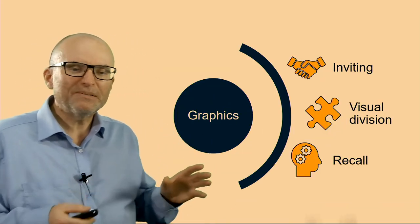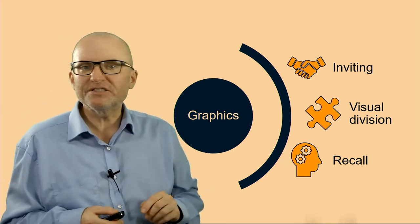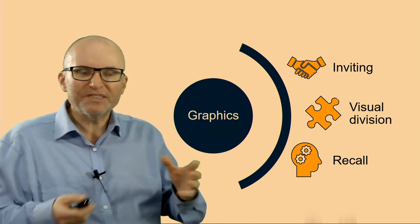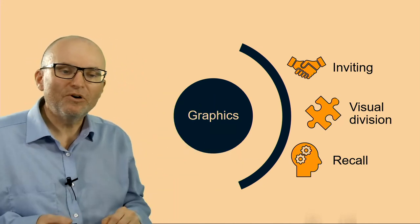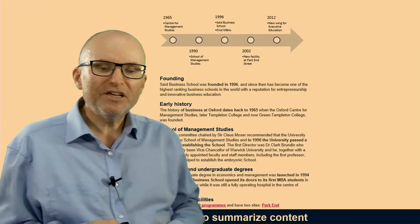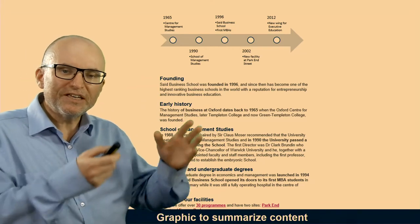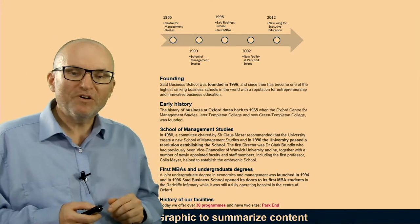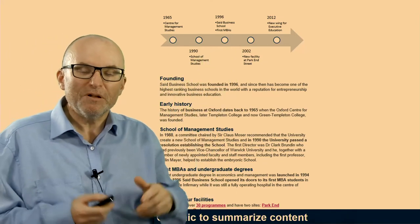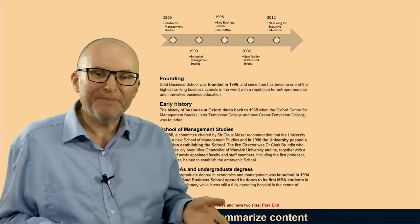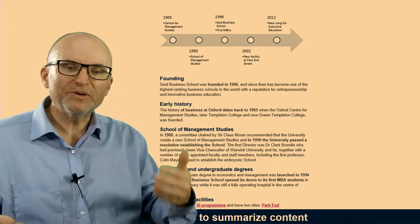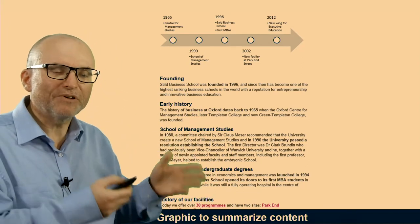The next area for providing guidance is to add graphics into your text. Graphics are more inviting — they provide a visual division of the text, making it easier to navigate and get around. They also improve recall because people have more things to hang their memories on. You can do something very simple, such as using flowcharts to summarize the content. Here's that same history page, and if you add a nice flowchart to it, many readers won't actually have to read that page anymore because they get the key information from it — or they can quickly refer back to it to recall that information later.